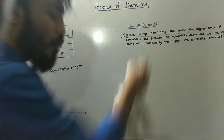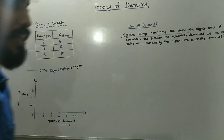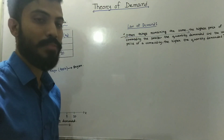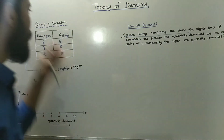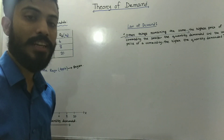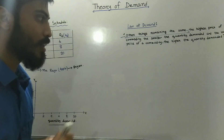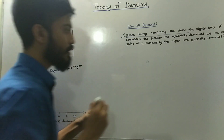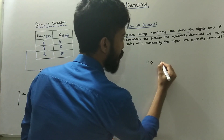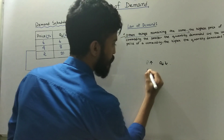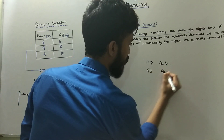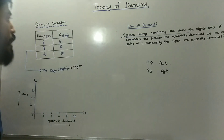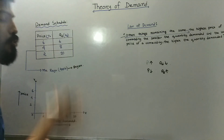The law of demand — let's show you an example of the law of demand. The demand schedule is the first step. The price is the first step. The demand schedule is the first step.